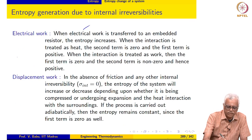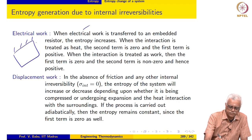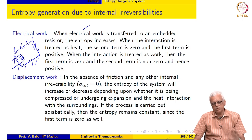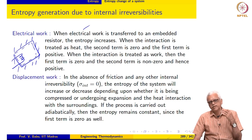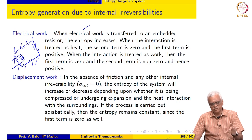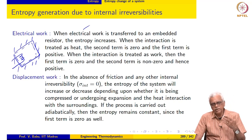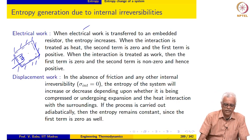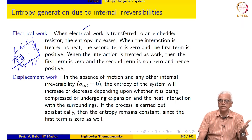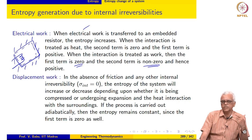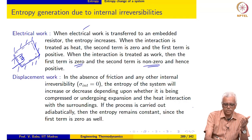The same goes for electrical work. If we take this to be the system, then we are transferring electrical work into the system. There are two ways of defining a system for this: one where the interaction with the surroundings is treated as transfer of electrical work, and one where the interaction is treated as a transfer of heat. If we treat it as electrical work, then the first term is zero. Ohmic heating is highly irreversible, so σ_int is large and positive, and the overall entropy change of the system is also positive.